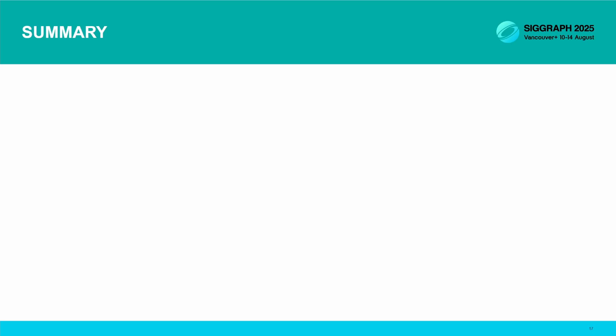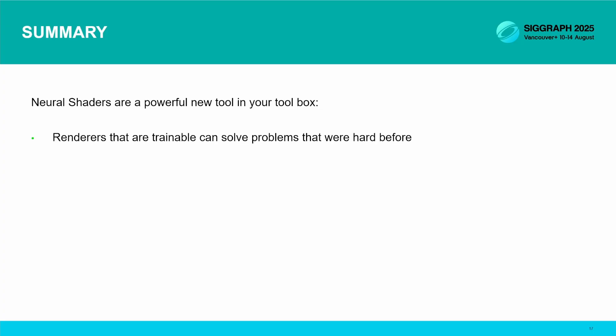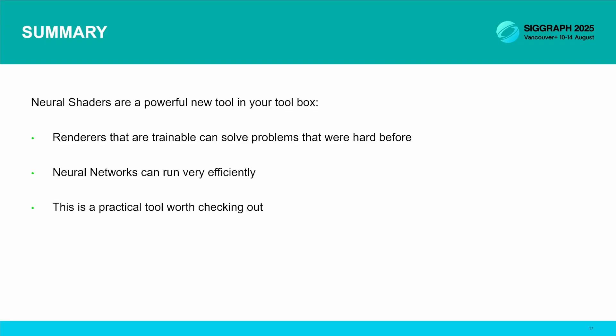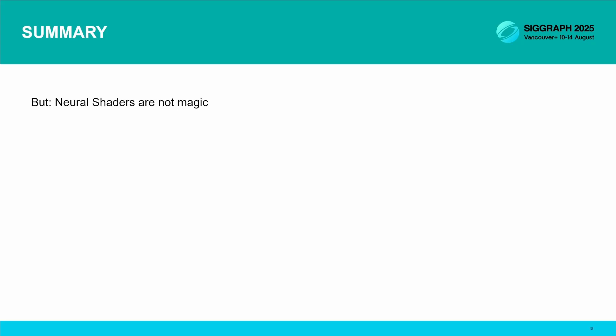So these are the main takeaways before we get into the next section. Neural shaders are a really useful new tool to have in your toolbox. They can breathe new life into old problems that might have been very difficult to solve before, and you might be able to do so at really high performance. This is not about catching the buzz around AI — this is about a useful tool that's practical today. Of course, this is not going to magically make everything better. Problems you are already solving well, or for which you know an exact solution, are not going to automatically improve if you throw a neural net at it. You need to think carefully about where they might be useful.